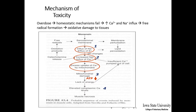With an ionophore overdose, the homeostatic mechanisms fail to maintain ions across the membranes such that calcium and sodium increase within the cells, causing free radical formation and oxidative damage to tissues. A probable sequence of events in muscle cells starts with high intracellular sodium leading to a secondary rise in intracellular calcium, which leads to mitochondrial swelling and damage, ultimately causing lack of energy and death of those muscle cells via lipid peroxidation and disruption of cell membranes.